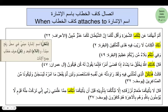Revisiting case two: when kaf al-khitab is attached to ism al-ishara, examples include tilka, zhalika, zhalikum, zhaliki, zhalikunna. The kaf in these words is harf al-khitab. For example, the word zhalikunna from Surat Yusuf: za is ism al-ishara, lam is for bu'd, and kunna — the kaf in kunna is harf khitab la mahalla laha min al-i'rab.